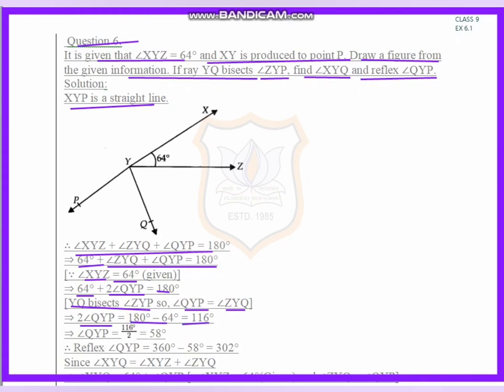We get the result equals 116. Now angle QYP equals 116 divided by 2, we get 58. The reflex of angle QYP equals 360 minus 58, which equals 302.